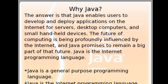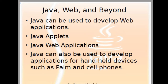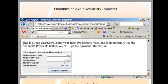In short, Java is used to develop programs that can run on the internet or on a web browser. Java is a general purpose programming language and is basically the internet programming language. Java can be used to develop web applications, Java applets, Java web applications, and also applications for handheld devices such as PDAs and cell phones.